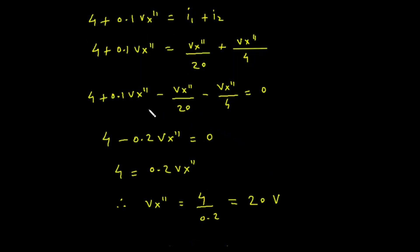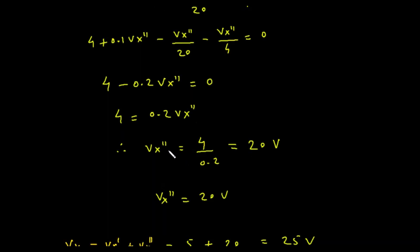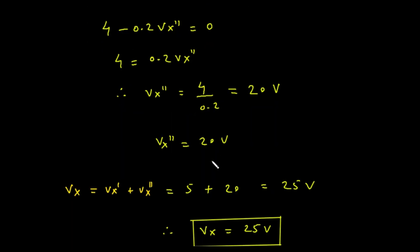Now we combine the terms with Vx double prime: 0.1 Vx double prime, minus Vx double prime divided by 2, minus Vx double prime divided by 4. This simplifies to minus 0.2 Vx double prime. The equation is now: 4 minus 0.2 Vx double prime equals 0. Adding 0.2 Vx double prime to both sides gives us 4 equals 0.2 Vx double prime. Dividing 4 by 0.2, Vx double prime equals 20. So Vx double prime is 20 volts.